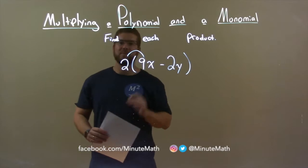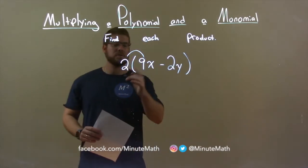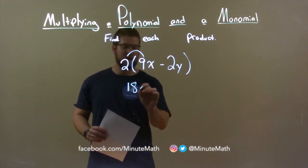So 2 times 9x is first. 2 times 9, 18, and then there's the x.